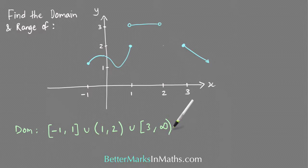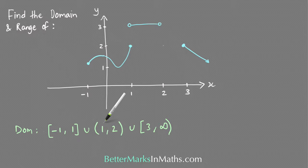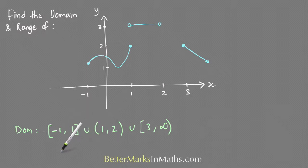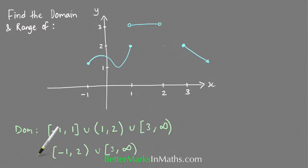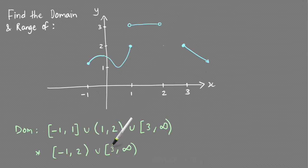Infinity always has a round bracket. The key thing here is that because 1 is included in the first section but not included in the second section, in the whole graph the x value of 1 does belong to the graph. So you can rewrite this whole thing as the interval from -1 all the way up to 2 with a round bracket on the 2, then union from 3 to positive infinity. That's the domain: all x values from -1 inclusive up to 2 non-inclusive, as well as from 3 inclusive up to infinity.